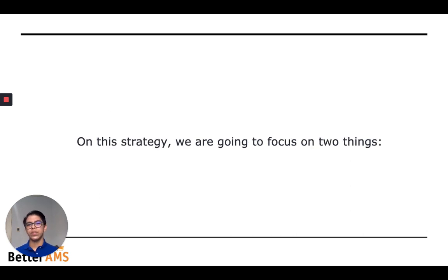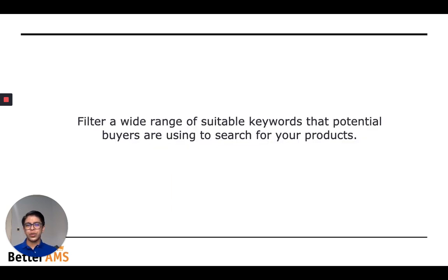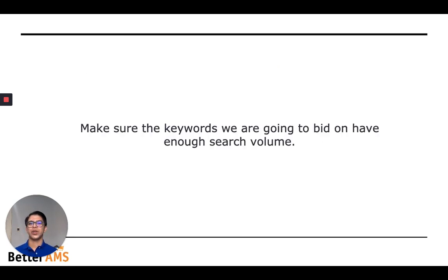On this strategy, we're going to focus on two things. The first one is keyword relevancy. We want to make sure that we're pulling keywords that are relevant to the products that you're selling, because we're going to filter a wide range of keywords. We want to make sure these keywords are suitable for your buyers when they search for your products. And we want to make sure the keywords have demand. We want to add keywords to campaigns that are going to start generating impressions immediately, and we want to make sure you're putting money in to get a return on your advertisement spend.